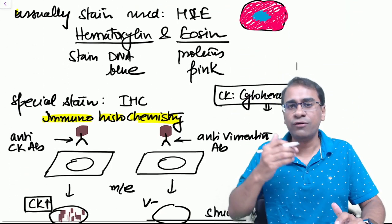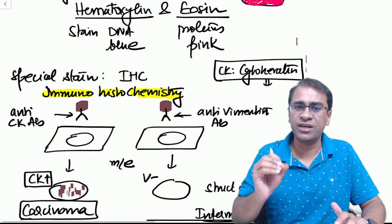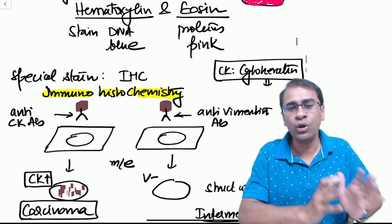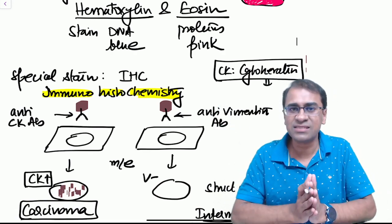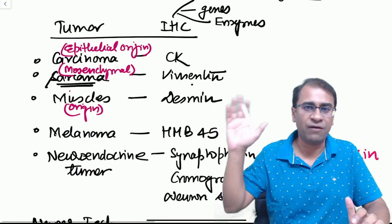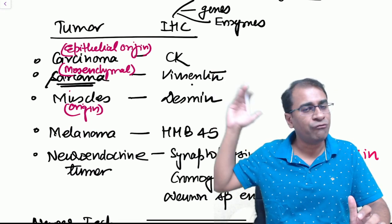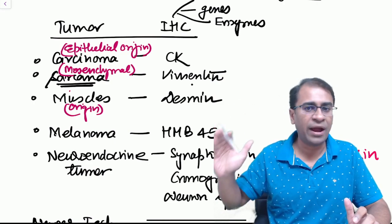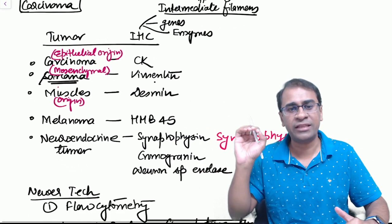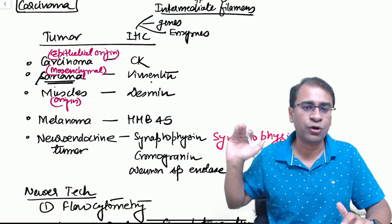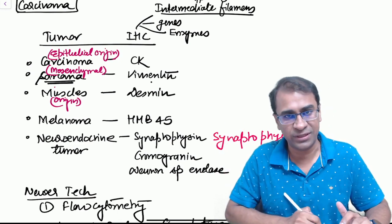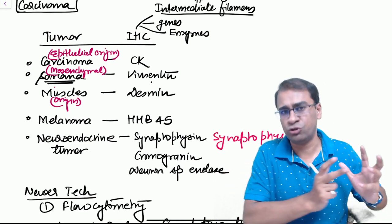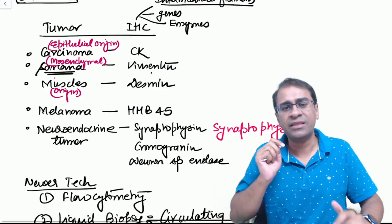You can stain any tissue by H&E stain, and a special stain used here is called IHC, immunohistochemistry. The IHC can be of various types: for carcinoma it is cytokeratin, for sarcoma it is vimentin, for muscle it is desmin, for melanoma it is HMB45, and not to forget the neuroendocrine tumor which has synaptophysin, chromogranin, and neuron-specific enolase.